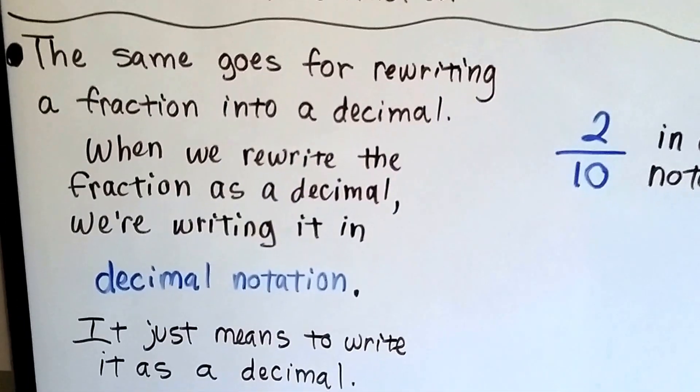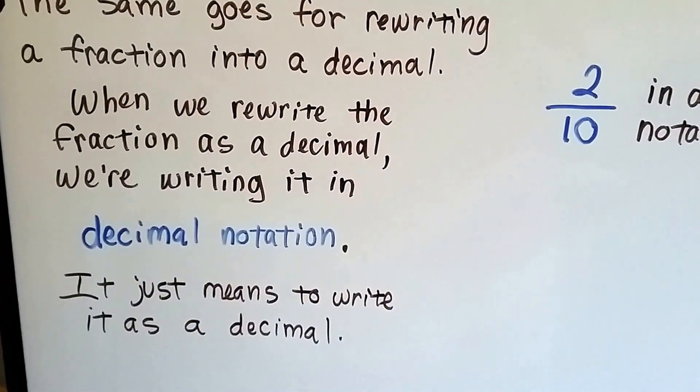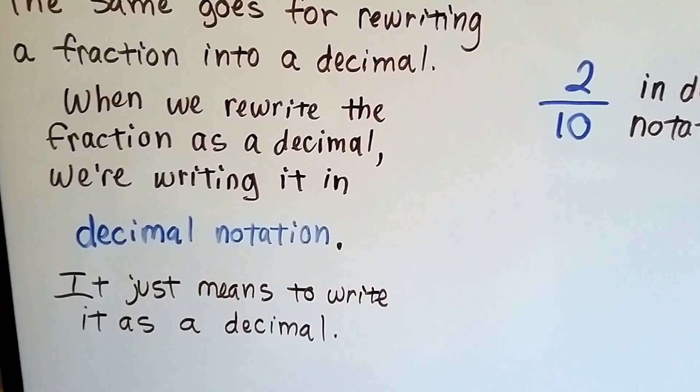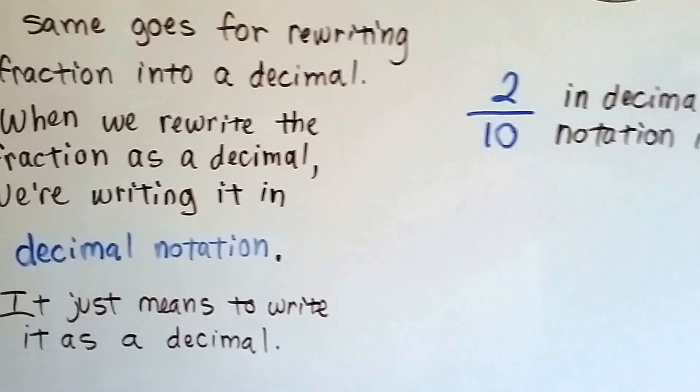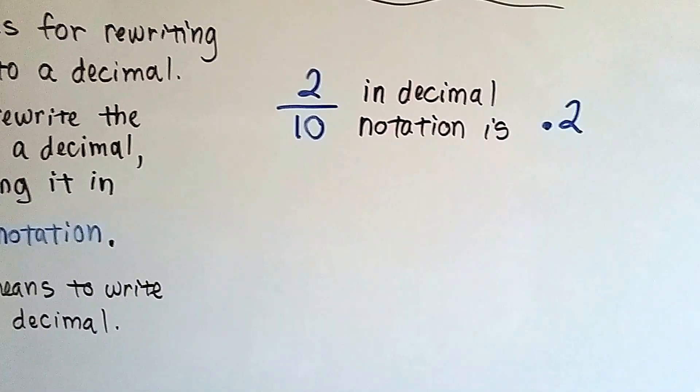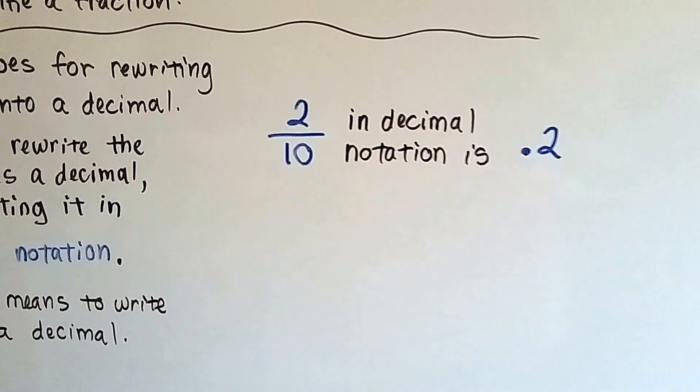The same goes for rewriting a fraction into a decimal. When we rewrite a fraction as a decimal, we're writing it in decimal notation. It just means to write it as a decimal. We have 2 tenths as a fraction. In decimal notation, it's 0.2. That's all. Just write it like a decimal.